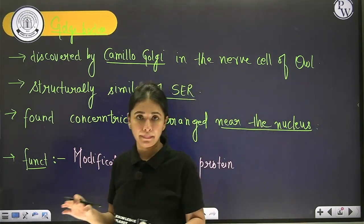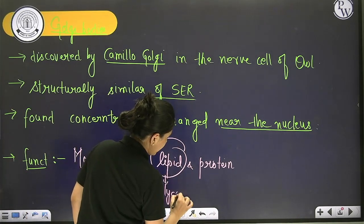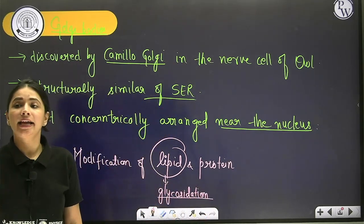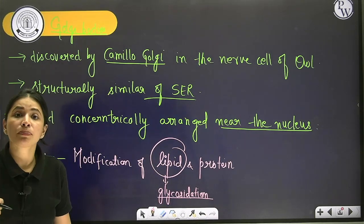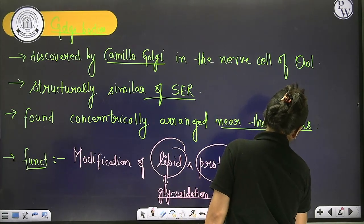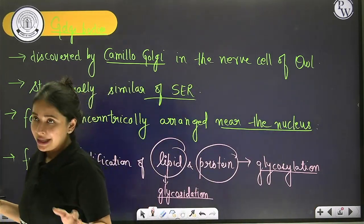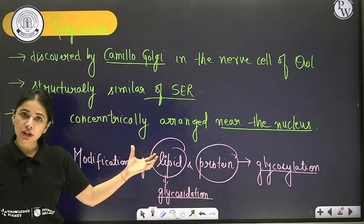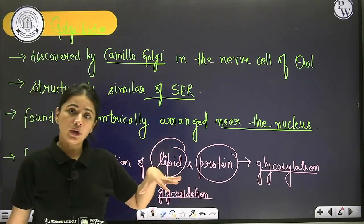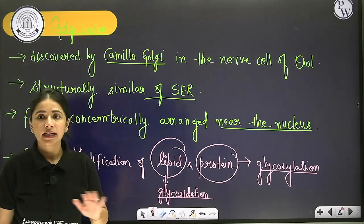This modification of lipids is known as glycosidation, and modification of proteins is known as glycosylation. Whatever ER produces — lipid and protein — they are given to Golgi body for modification. Once modification is completed, protein becomes glycoprotein and lipid becomes glycolipid.